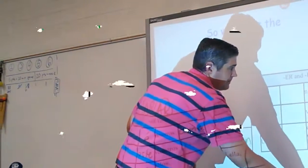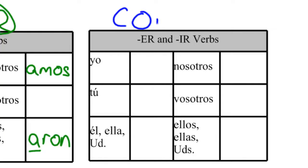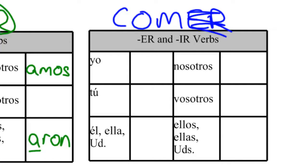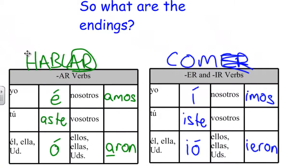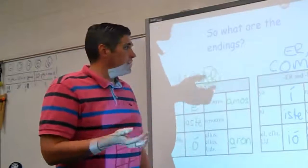Okay, let's head over to the ER and IR verbs — very similar. Let's take a verb like comer — to eat. We drop the ending and then add our new ones: yo comí, tú comiste, él/ella/usted comió, nosotros comimos, vosotros comisteis — just like the tú form with -IS — ellos/ellas/ustedes comieron. If you compare it with the ARs, those are the endings. This is your introduction and we're going to practice it.